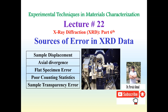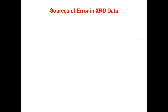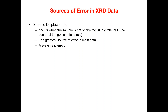Hello dear students, welcome to Experimental Techniques and Material Characterizations, Lecture Number 22. I'm Dr. Provis Emma. In this lecture, we will continue our discussions on X-ray diffraction — this is Part 6. We will discuss sources of error in XRD data, including sample displacement, axial divergence, flat specimen error, poor counting statistics, and sample transparency error.